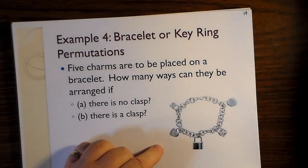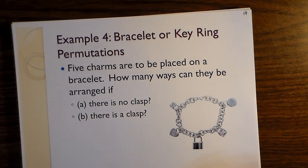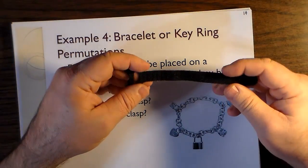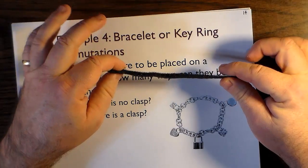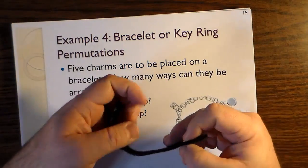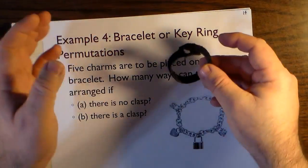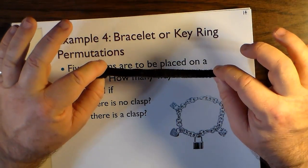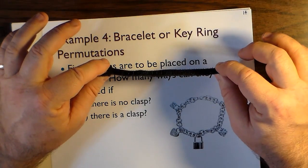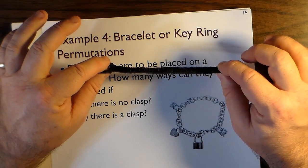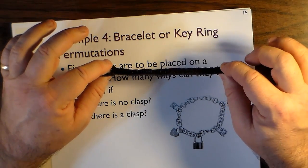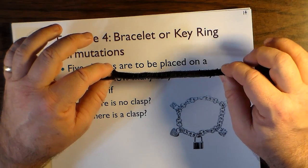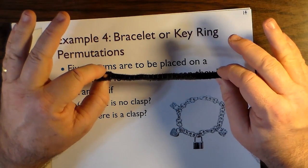However, if there is a clasp, that's a game changer, because if we have a circular object with a clasp, notice I can undo the clasp, and I suddenly have a linear arrangement of what used to be a circular object. So undoing the clasp actually makes it linear. So now I have a linear permutation, and now the numbers of arrangements, because the clasp makes a distinct position, is now five factorial. It reverts all the way back to five factorial, no division by two, and no subtraction.